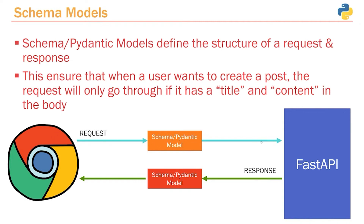That's for the request. However, we can also do this for the response, and we haven't actually done that yet. As our models and database get more complex, there are going to be a lot of fields for posts and users that you may not want to send back to the client. So we can actually define a model to tell FastAPI exactly the data fields we should be sending back. That's what your schema and Pydantic models do — they ensure that the request and response are shaped in a specific way.